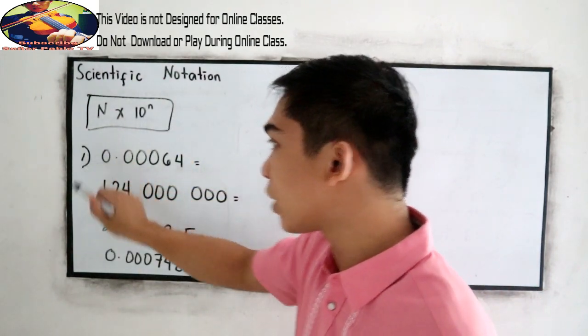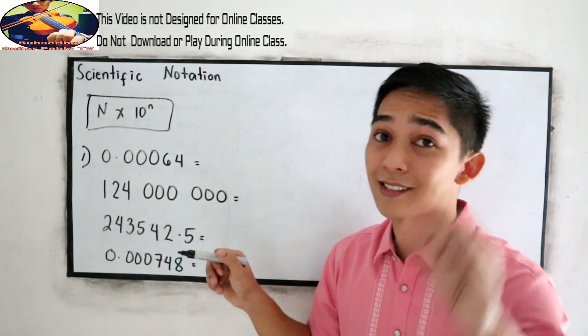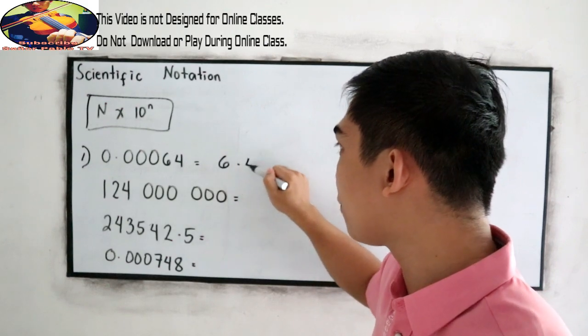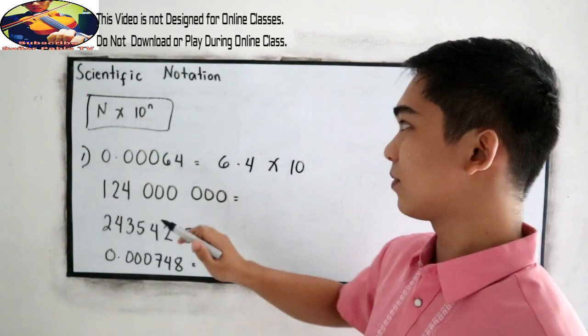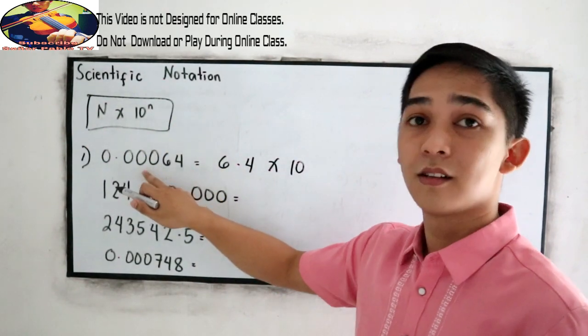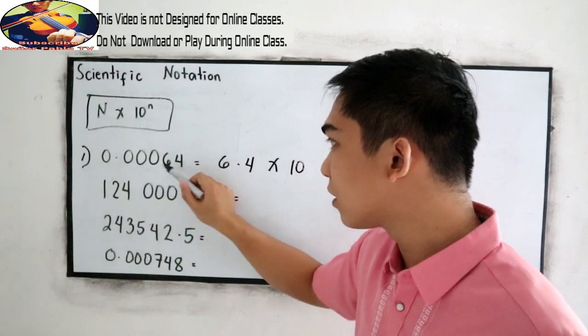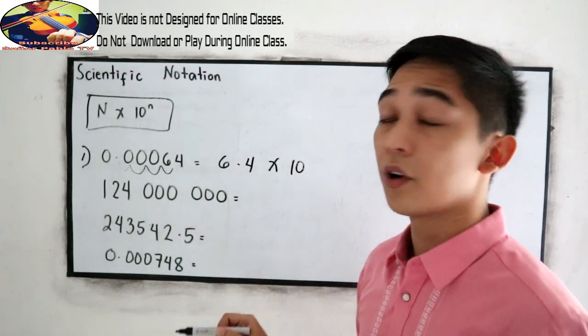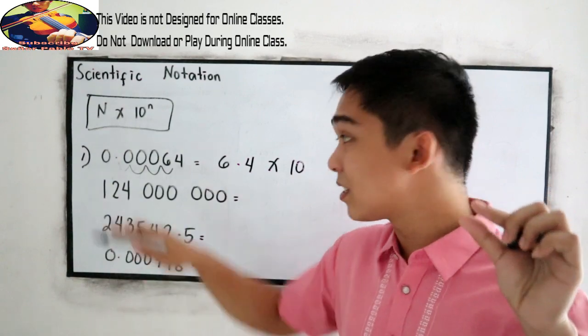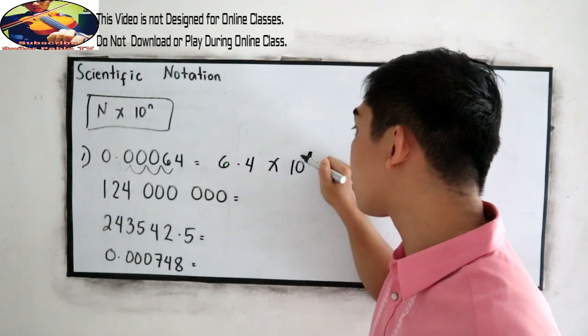So let's say our example number 1 is 0.00064. We know that it has a small value. So we can write this as 6.4 times 10. So this is our N, 6.4 times 10. Then we know that it has a small amount, or that is a least number. So we move our decimal point 1, 2, 3, 4 - 4 units to the right. But we know that this value is a small number. So instead of writing 4 here, we're going to write negative 4.